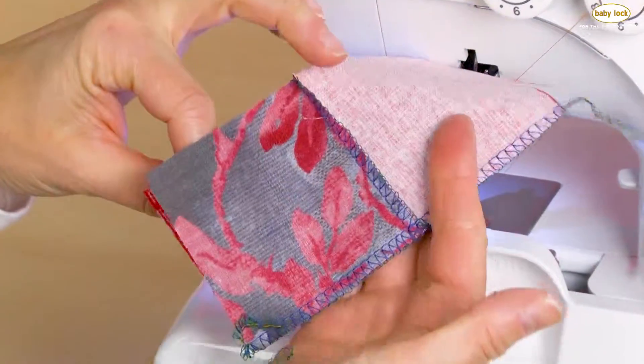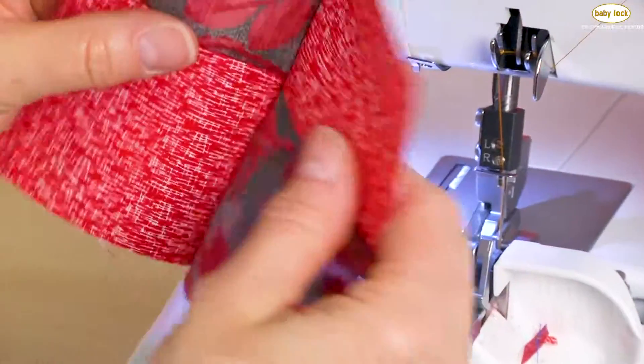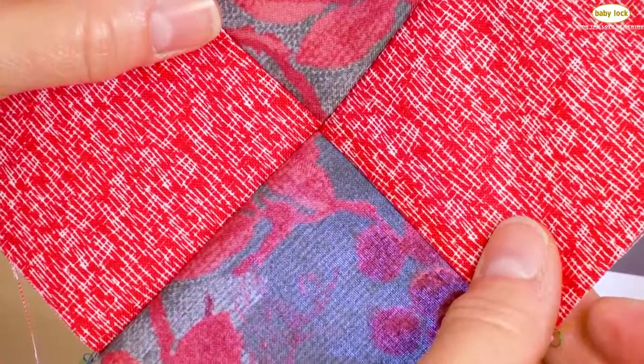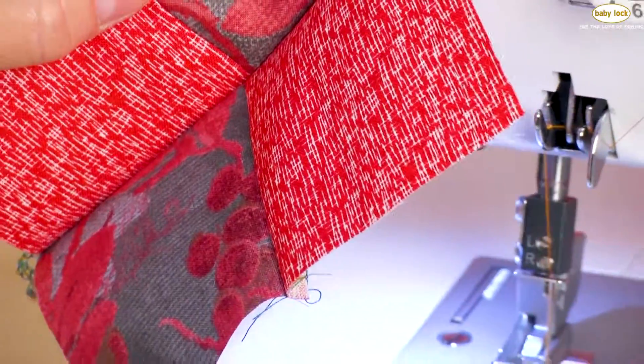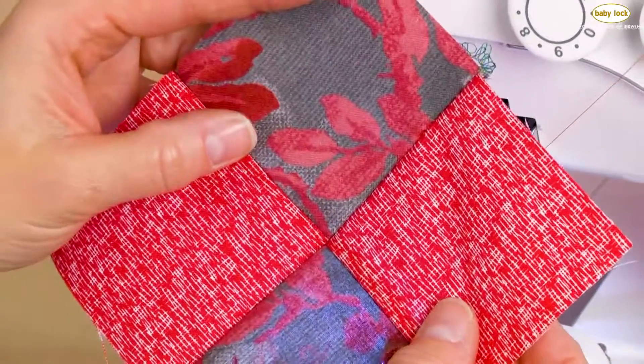This was all done using that three-thread overlock stitch, trimming off just a little fabric, the standard presser foot, and the cutting width guide all on your Baby Lock Vibrant.